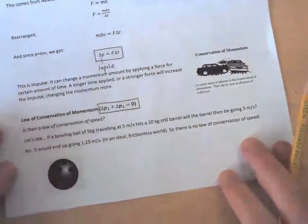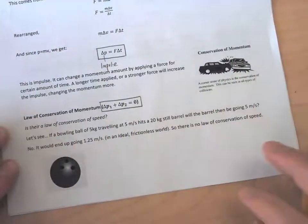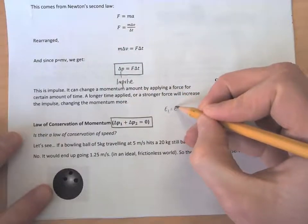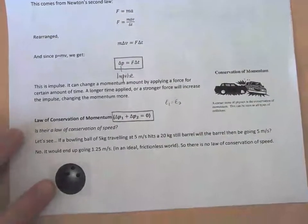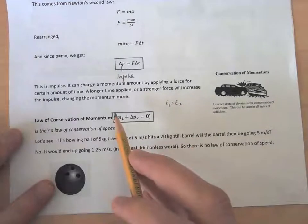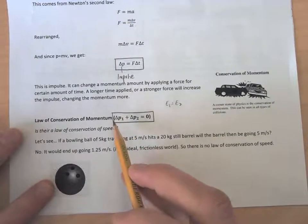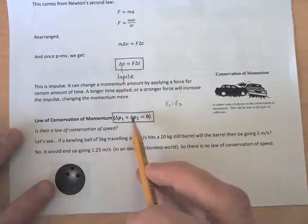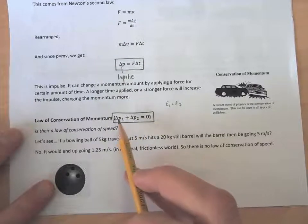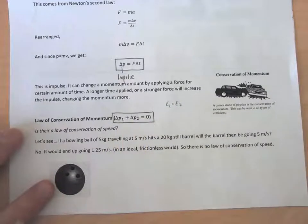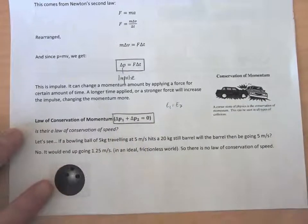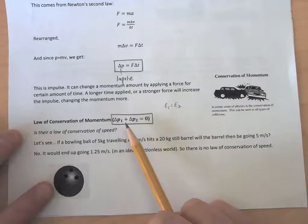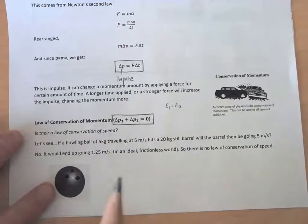Now we come to one of the most important concepts in momentum: the Law of Conservation of Momentum. It's similar to our energy conservation equation. The change in momentum of one object can only change the momentum of a second object by the same amount — no momentum is lost in an ideal vacuum. When one object hits another, momentum is conserved between the two.